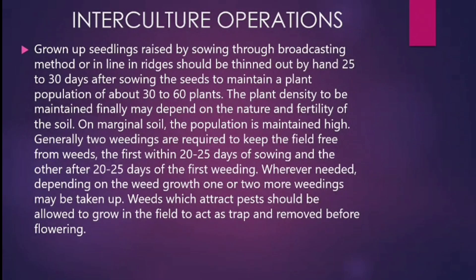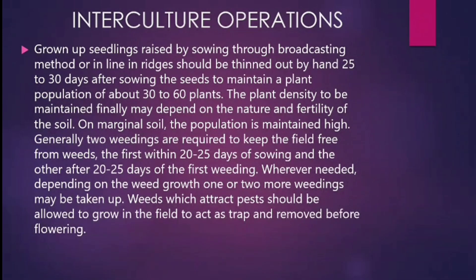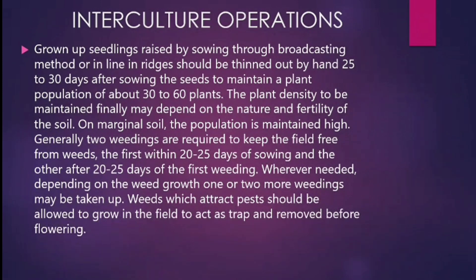Interculture Operations. Grown-up seedlings raised by broadcasting or in-line sowing in ridges should be thinned out by hand 25 to 30 days after sowing to maintain a plant population of about 30 to 60 plants. The plant density depends on the nature and fertility of the soil; on marginal soil the population is maintained high. Generally two weedings are required — the first within 20 to 25 days of sowing, and the other after 20 to 25 days of the first weeding. Weeds which attract pests should be allowed to grow as trap crops and removed before flowering.